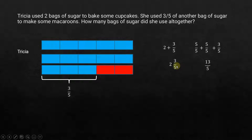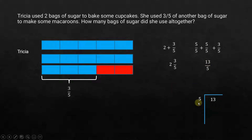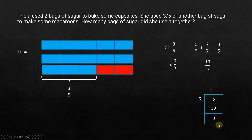An improper fraction can be converted into a mixed number. If we divide 13 over 5: 5 times 2 gives 10 and the remainder is 3. So there are two wholes and what is left is 3 over 5, giving us 2 and 3/5.